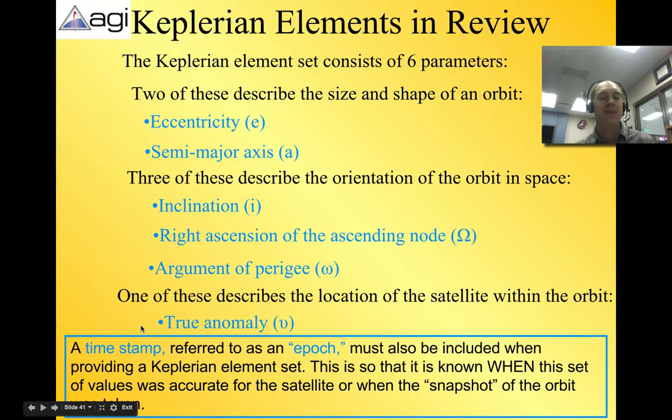So a time stamp referred to as an epoch must also be included when providing a Keplerian element set. This is so that it is known when the set of values was accurate for the satellite or when the snapshot of orbit was taken. So there are so many different factors. We can tell exactly where it is based on true anomaly, but in order to know when it was there, you have to know the epoch. There are different ways that I've heard people pronounce this. But that is your actual time stamp. It was there on June 1, 2012 at 10:47.12 a.m.